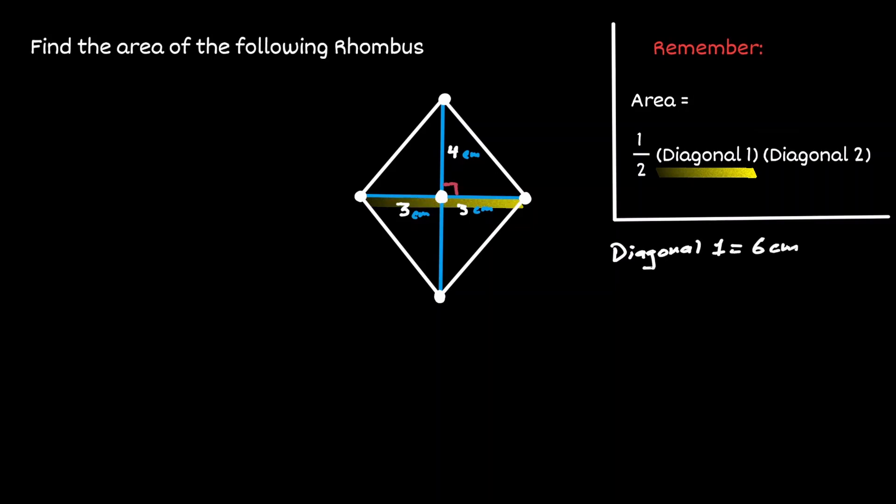And we can apply the same strategy to find the length of the second diagonal in a rhombus. We're given that this section is only 4 centimeters, but we know that diagonals bisect each other. Therefore, this bottom section is also of 4 centimeters. So now we can say that the second diagonal is of a value of 8 centimeters.